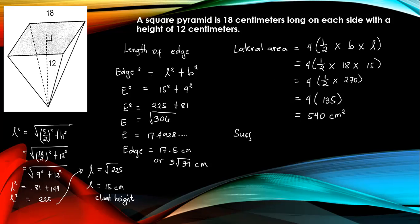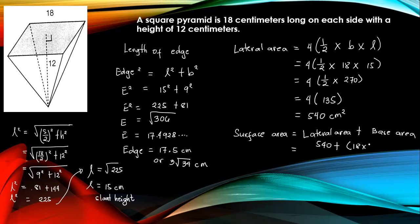Now we can compute the surface area. Surface area equals lateral area plus the base area. The lateral area is 540, and the base area equals 18 times 18, which is 324. So 540 plus 324 is equal to 864 centimeters squared.